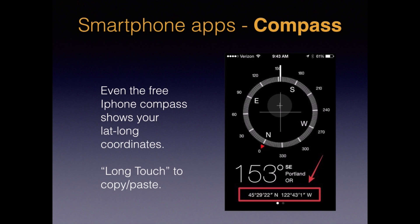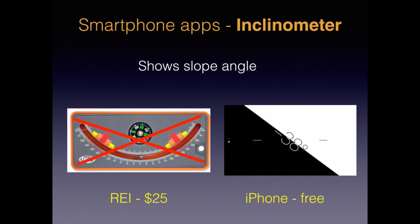Most iPhone users have probably discovered the free compass app that comes with your phone. Did you know that the compass also shows your latitude and longitude coordinates right on the bottom of the screen? This means anyone lost in the woods with an iPhone has a means to know their exact location, even without downloading special apps. If you do a long touch on these coordinates, you can copy and paste them into a text or email. Also, the second page of your compass app has an inclinometer — you can use this to show the angle of a slope, which is helpful to assess potential avalanche conditions or to measure how steep your climb was. Normally, an inclinometer is only found on dedicated devices or as an option on expensive compasses.